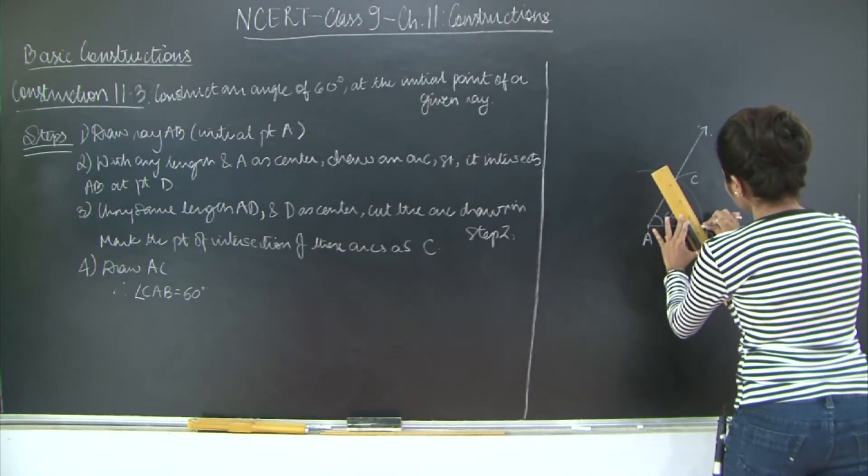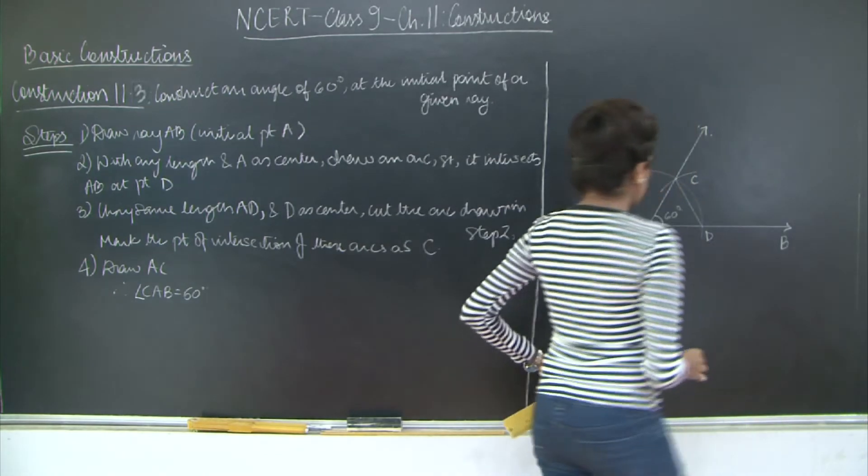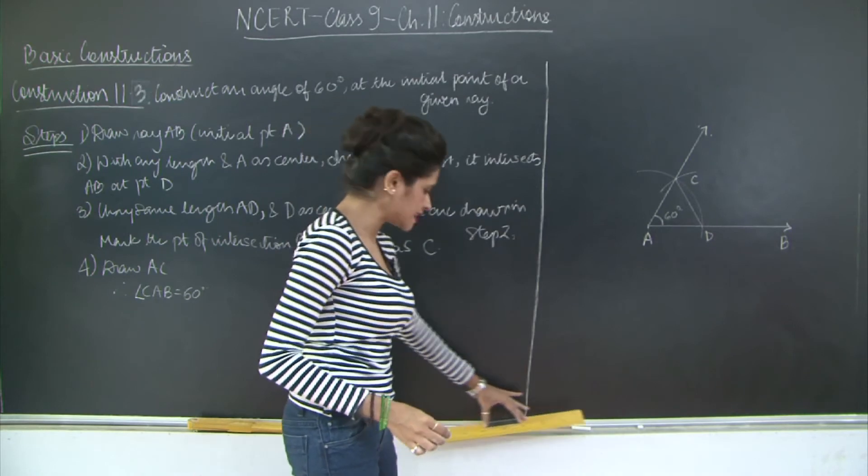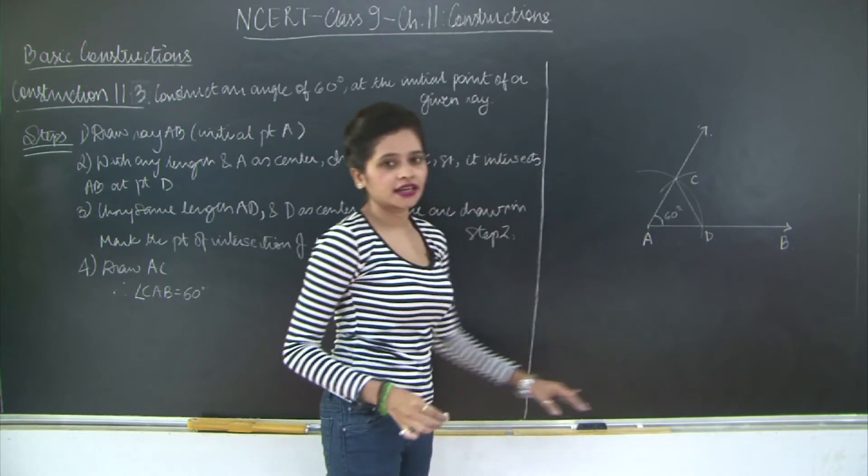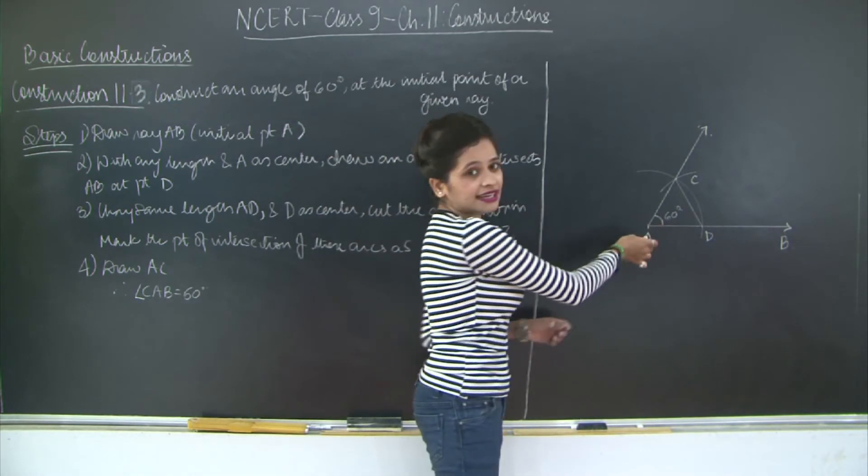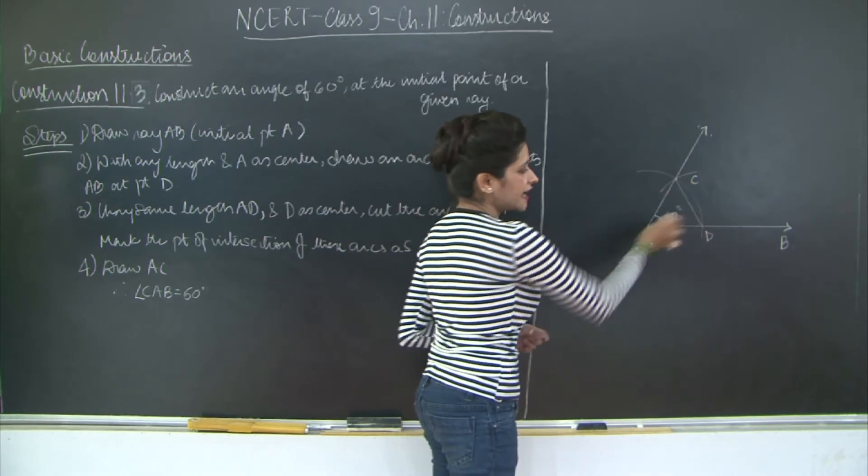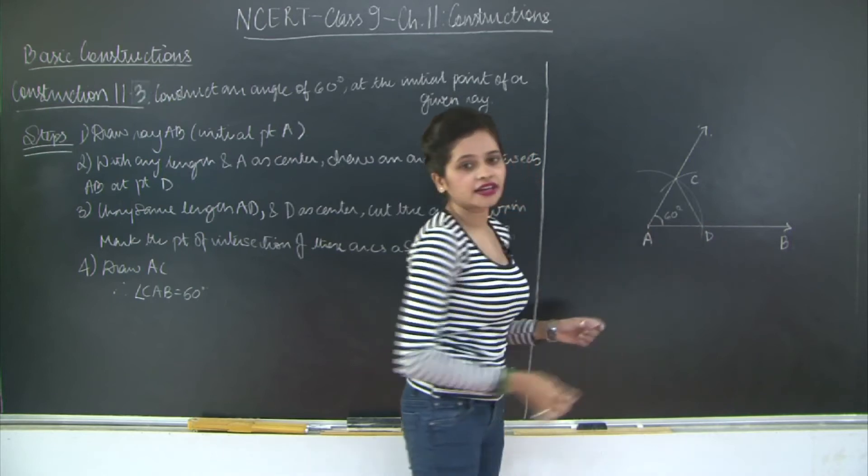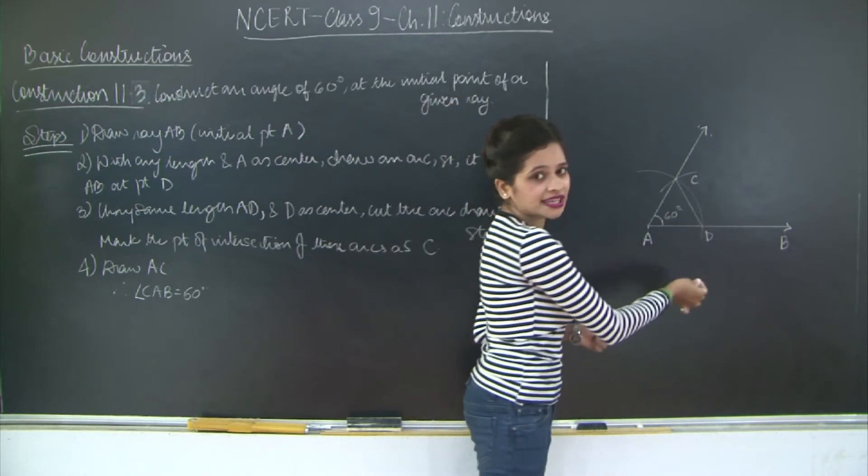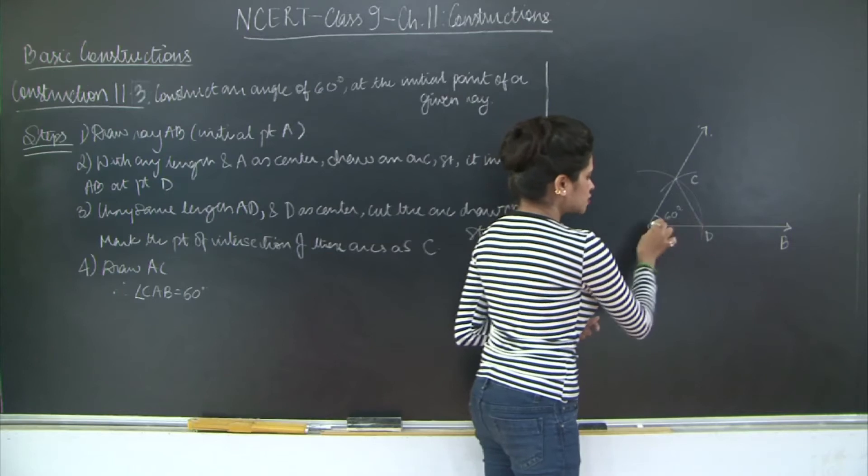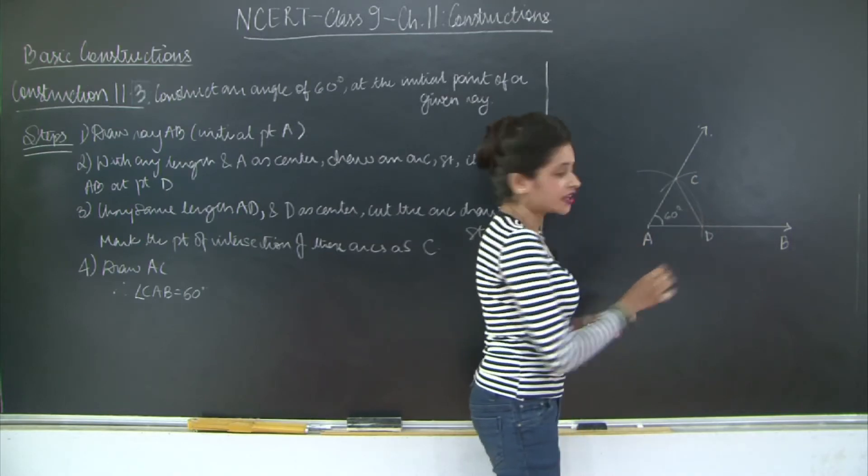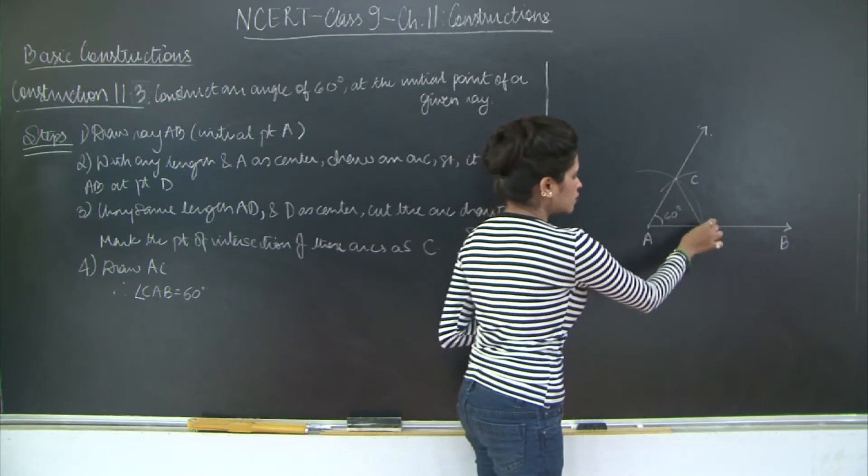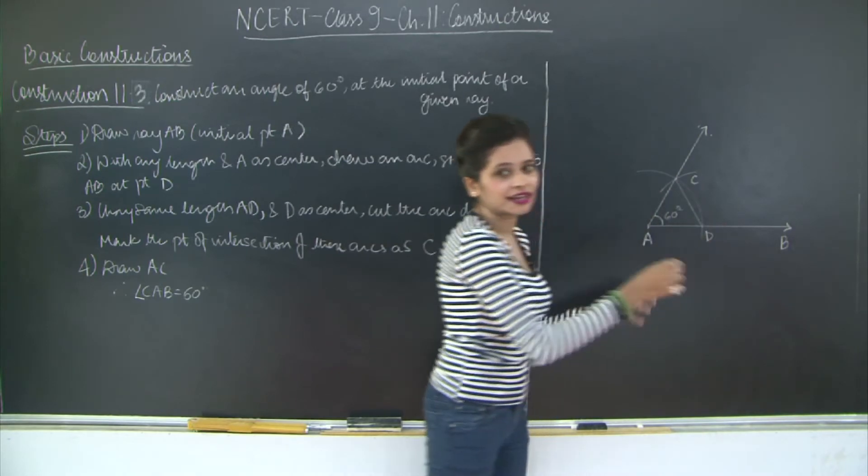If you notice, AC is equal to AD because they are the radii of the same circle. Remember I had taken some length and also whatever was the length I did not change it. So DA is equal to CA, which is equal to CD.